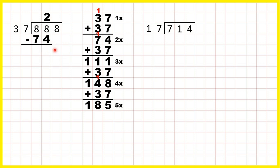Now we're going to subtract and bring down. 8 minus 4 is 4, 8 minus 7 is 1, and we bring down the 8, so we have 148 divided by 37. We can see that 4 times 37 is exactly 148, so the last digit of our answer is 4. We haven't got any other digits to bring down, so our answer is 24.